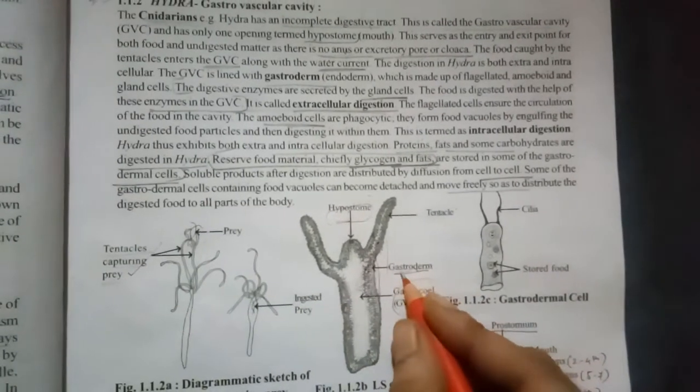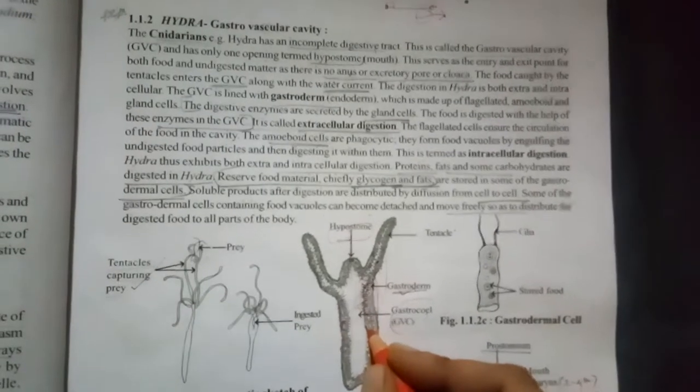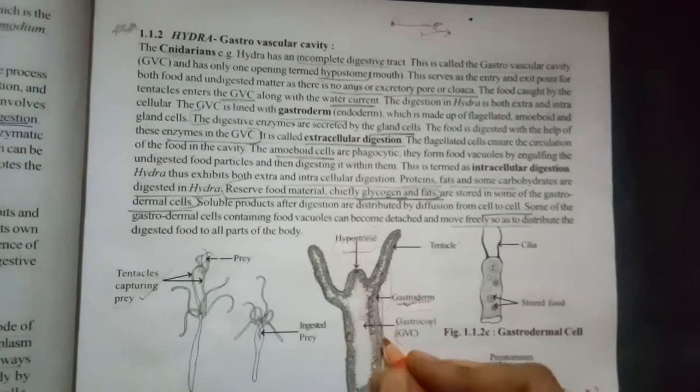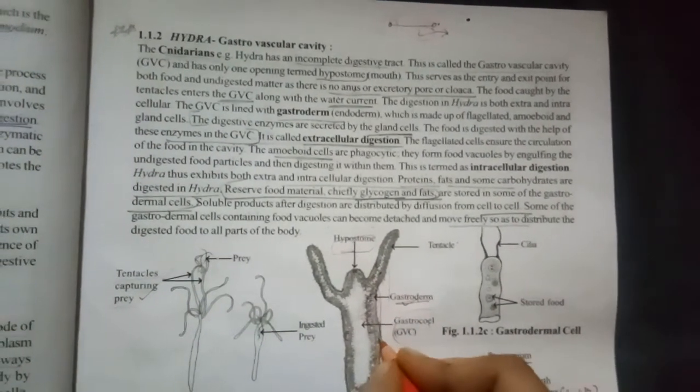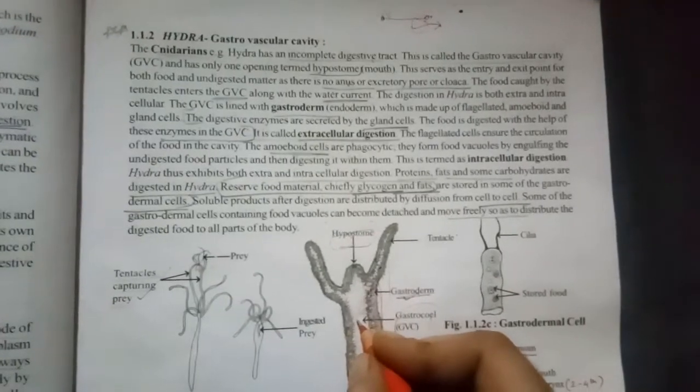So gastroderm has the amoeboid cells or gland cells and these gland cells will secrete some enzymes, digestive enzymes, with the help of which the food will be digested. That is called as extracellular digestion, that is one mode of digestion.